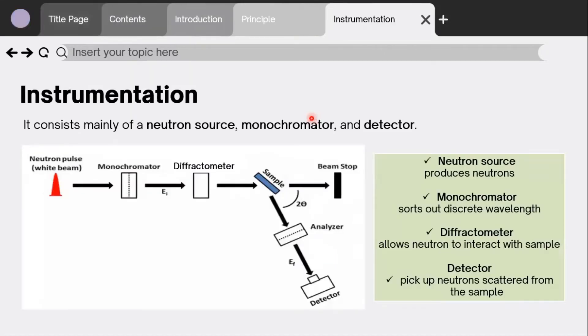This is the instrumentation for neutron diffraction. It consists mainly of the neutron source, monochromator, and detector. The neutron source produces neutrons. The monochromator selects the desired wavelength. The diffractometer allows neutrons to interact with the sample, and the detector picks up neutrons scattered from the sample.